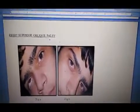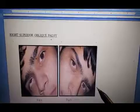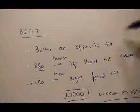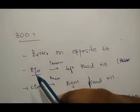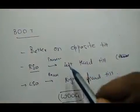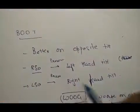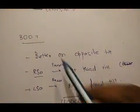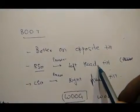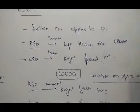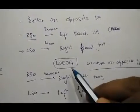We have a mnemonic for this: BOOT and WOOG. BOOT means 'better on opposite tilt'. This means right superior oblique palsy presents with left head tilt, and left superior oblique palsy presents with right head tilt. On left head tilt, there would be less diplopia in right superior oblique palsy.